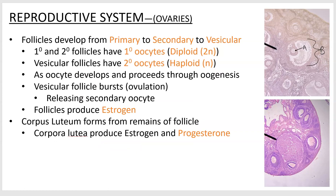Let's go to the ovaries. The follicles are not all the same — they start off as primary follicles, then get bigger adding more cell layers, called secondary. Eventually they become these big vesicles called vesicular follicles — you may see it called graafian follicle too, but vesicular is more descriptive. The cells inside, called oocytes, change depending on which follicle they're in and what state of development they're in. As they go through meiosis, they start off diploid and are called primary oocytes. Once they go through the first stage of meiotic division, they become haploid and are called secondary oocytes.